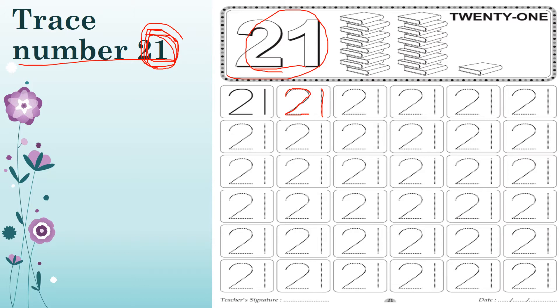The first step in tracing number 21: look here, you start from here, then you make number 2, and then after that, number 1. So this is number 21.